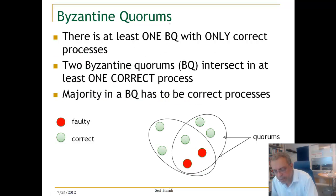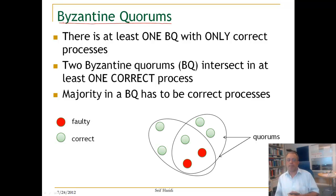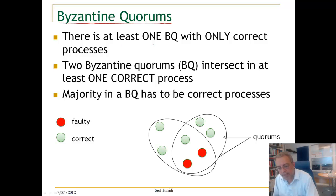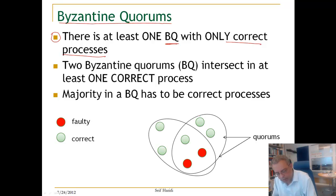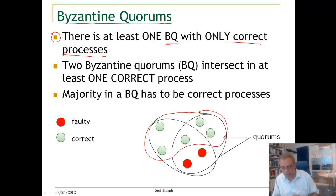Now, Byzantine quorums have a number of properties, and we can contrast these to the properties of a normal quorum — a crash-fault quorum. The first property: there exists at least one Byzantine quorum with only correct processes. With normal quorums, we also have this property. As shown in the picture, a quorum with only correct processes exists.